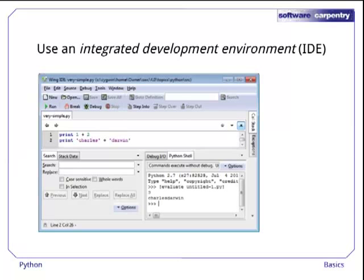A third choice that combines the best features of the two above is to use an integrated development environment, or IDE. We recommend Wing 101, the free student version of Wing, but there are many others. The IDE gives you an editor that is customized for displaying Python source code, and an interactive shell for trying things out. We'll explore some of the other tools IDEs provide later in this course.